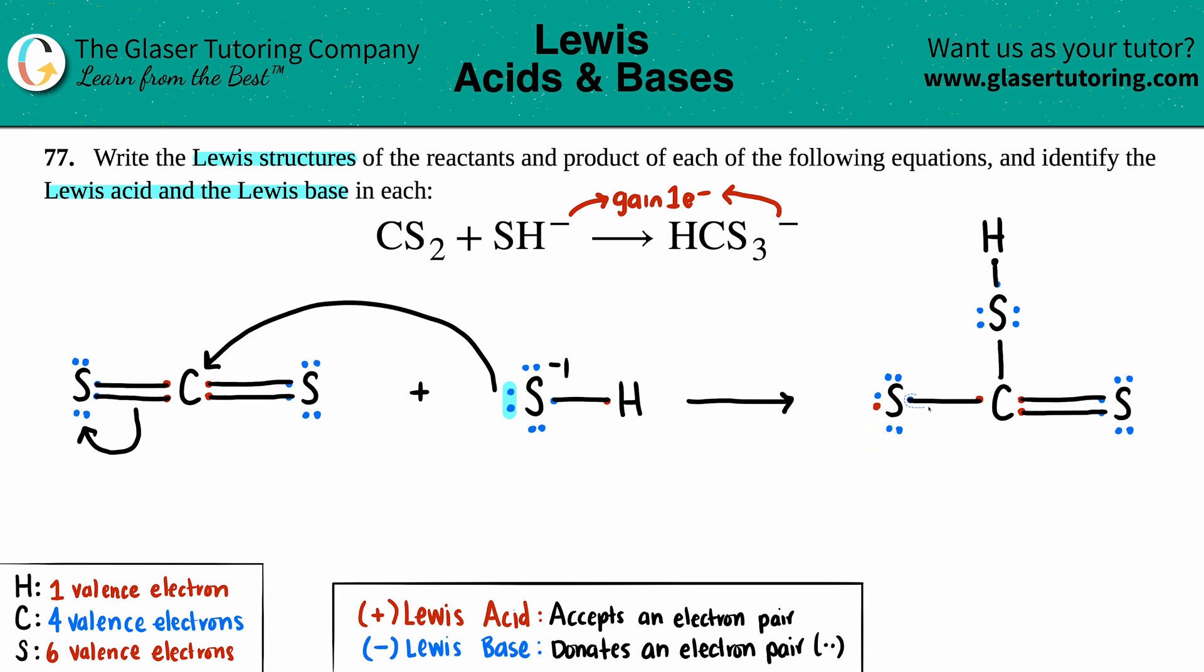And now if you look, this sulfur has the octet, this carbon has the octet, everybody's got the octet, everybody's nice and happy. If we wanted to find out where that negative charge is, we would just do a formal charge on each, and it turns out that this sulfur is the one that now has that negative one charge.